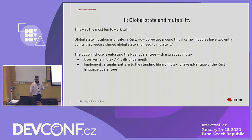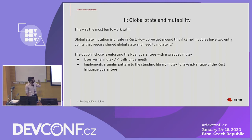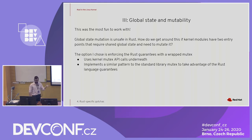The most fun part: how can we get idiomatic Rust outside of everything we've built on top of? One option I chose for providing a safe interface to global state mutation is that I actually designed a mutex that has a similar pattern to the standard library, which actually wraps the kernel mutex functionality. This really gives us that ability to keep the Rust promises that the language requires while also giving us more idiomatic Rust code.